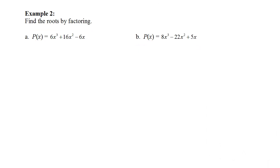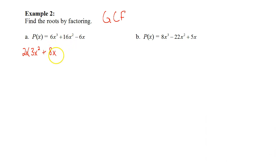We want to find the roots by factoring. We're going to factor this just like we did back in 11.3. The first step is to always look for a GCF — a greatest common factor — which both of these examples have. For this first example, I'm going to factor out a 2x. When I do that: 6 divided by 2 is 3, giving 3x² since we factor out an x; 16 divided by 2 is 8, giving 8x; and 6 divided by 2 is 3, giving minus 3.